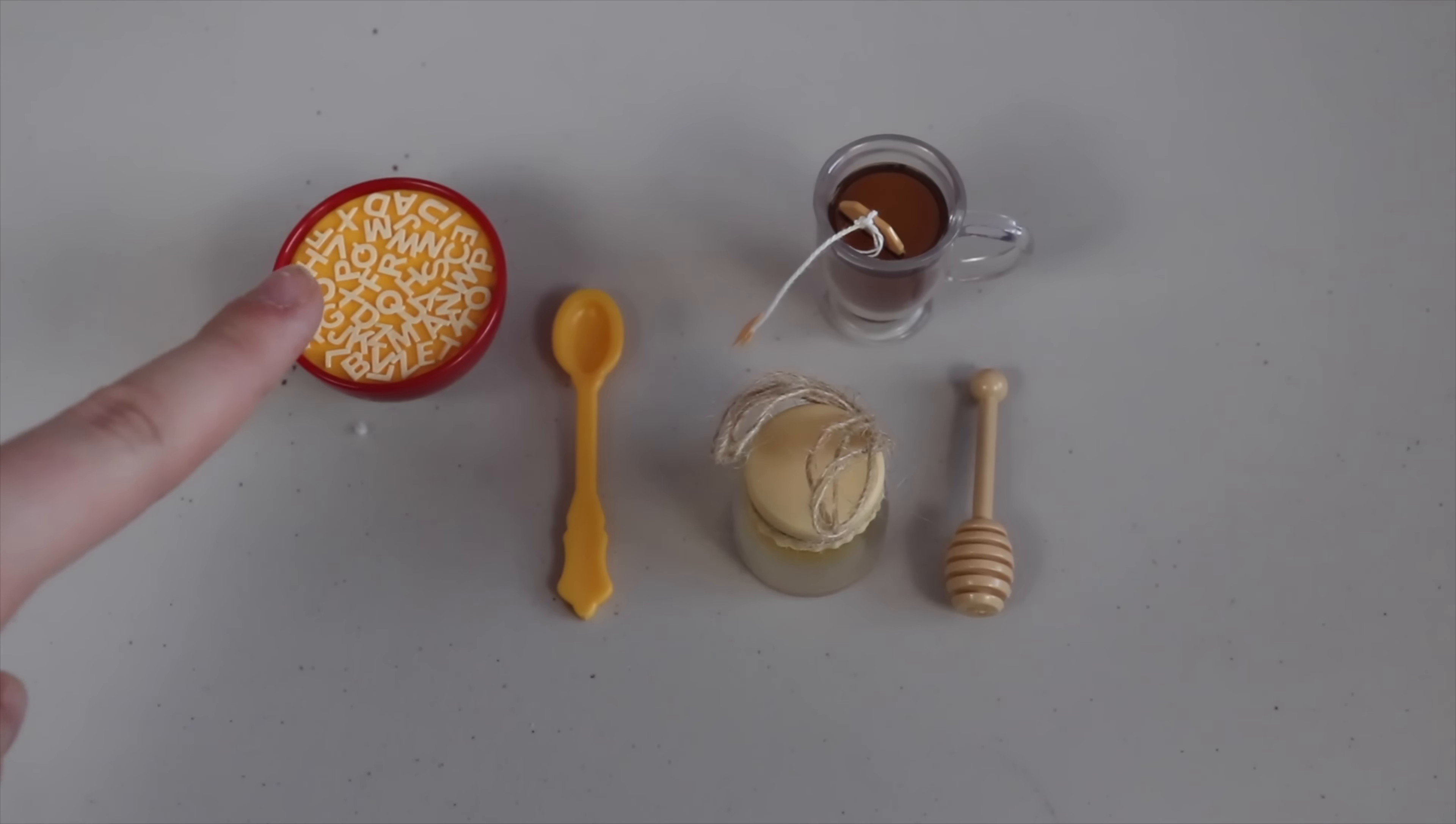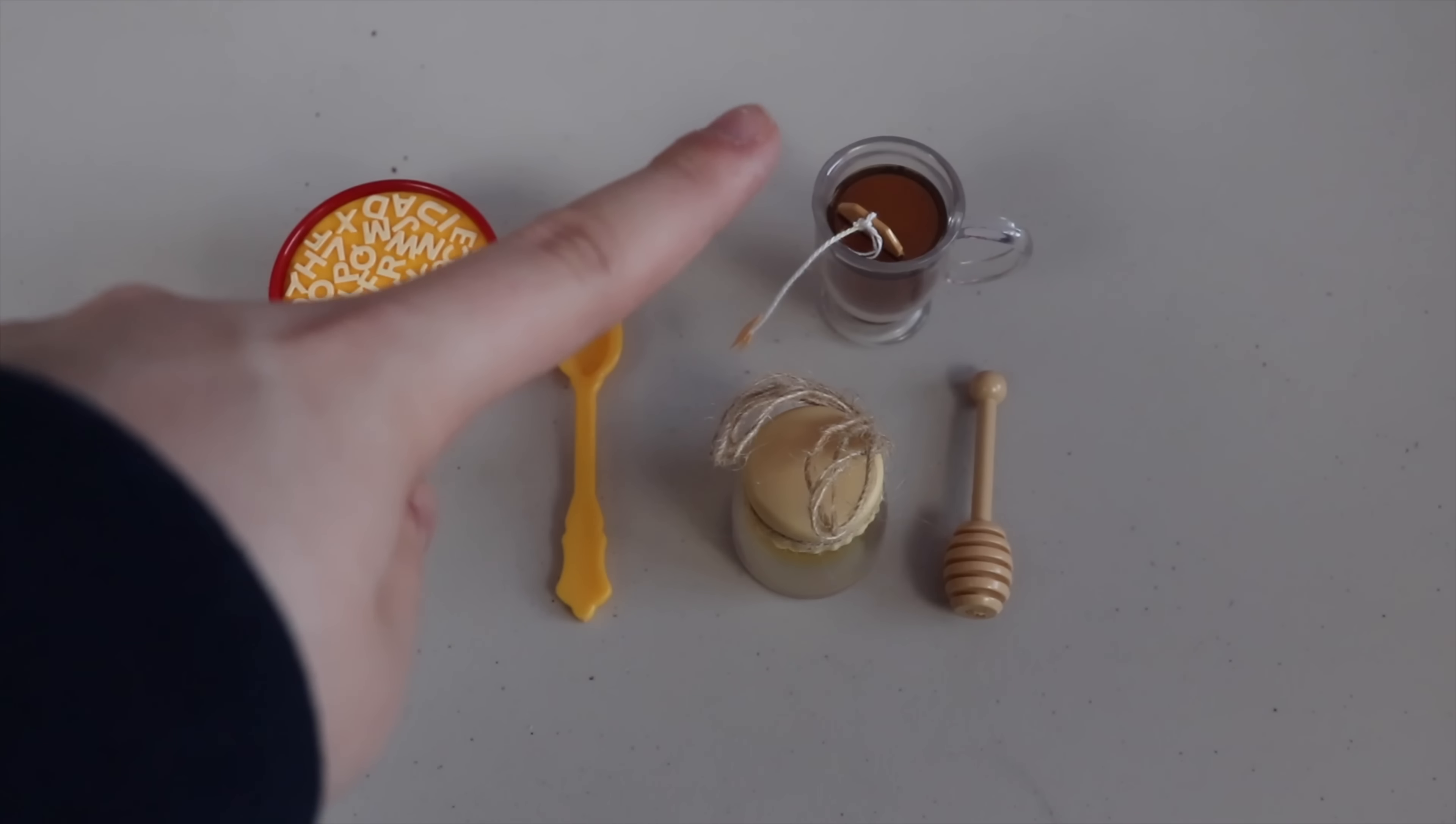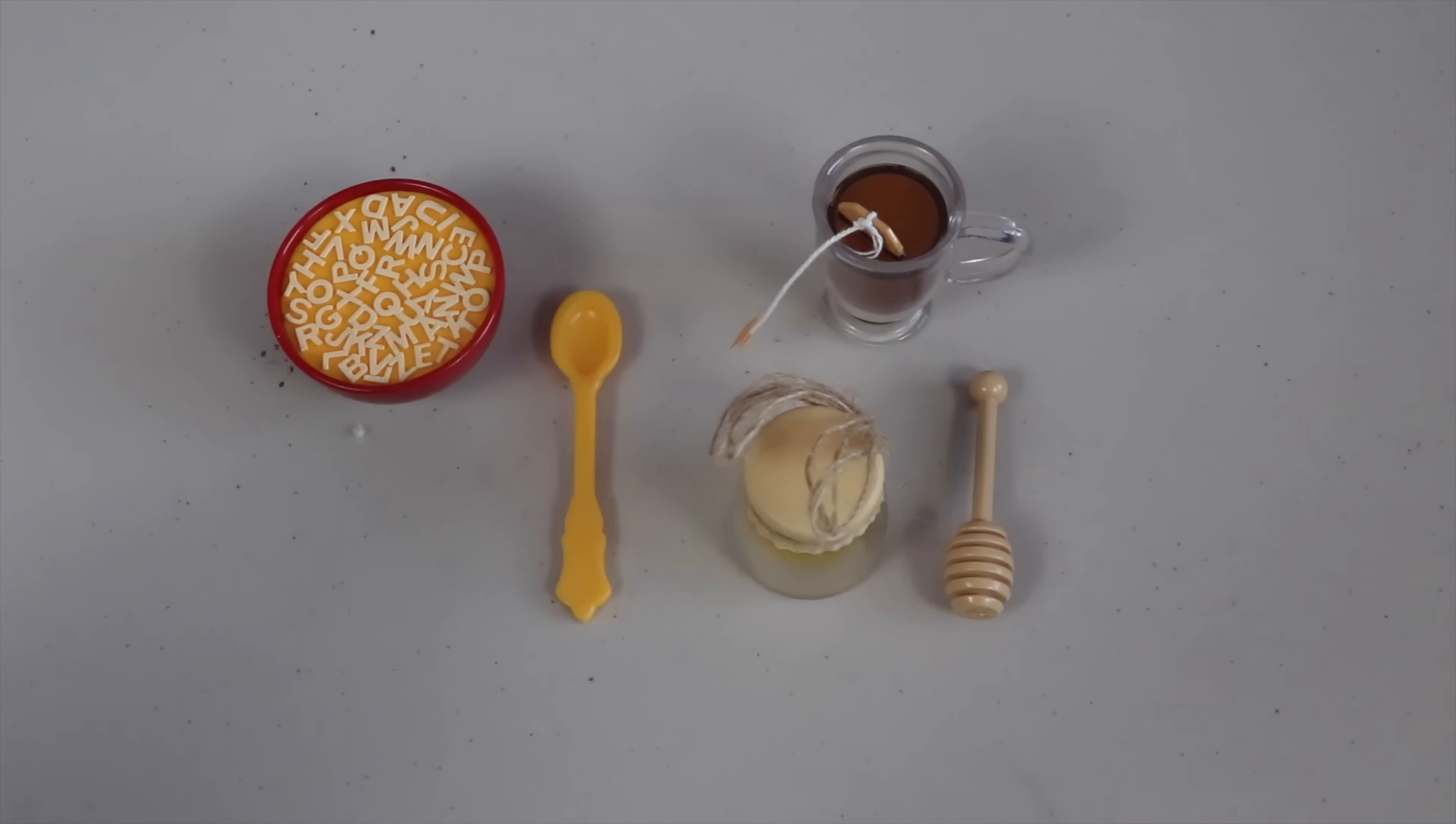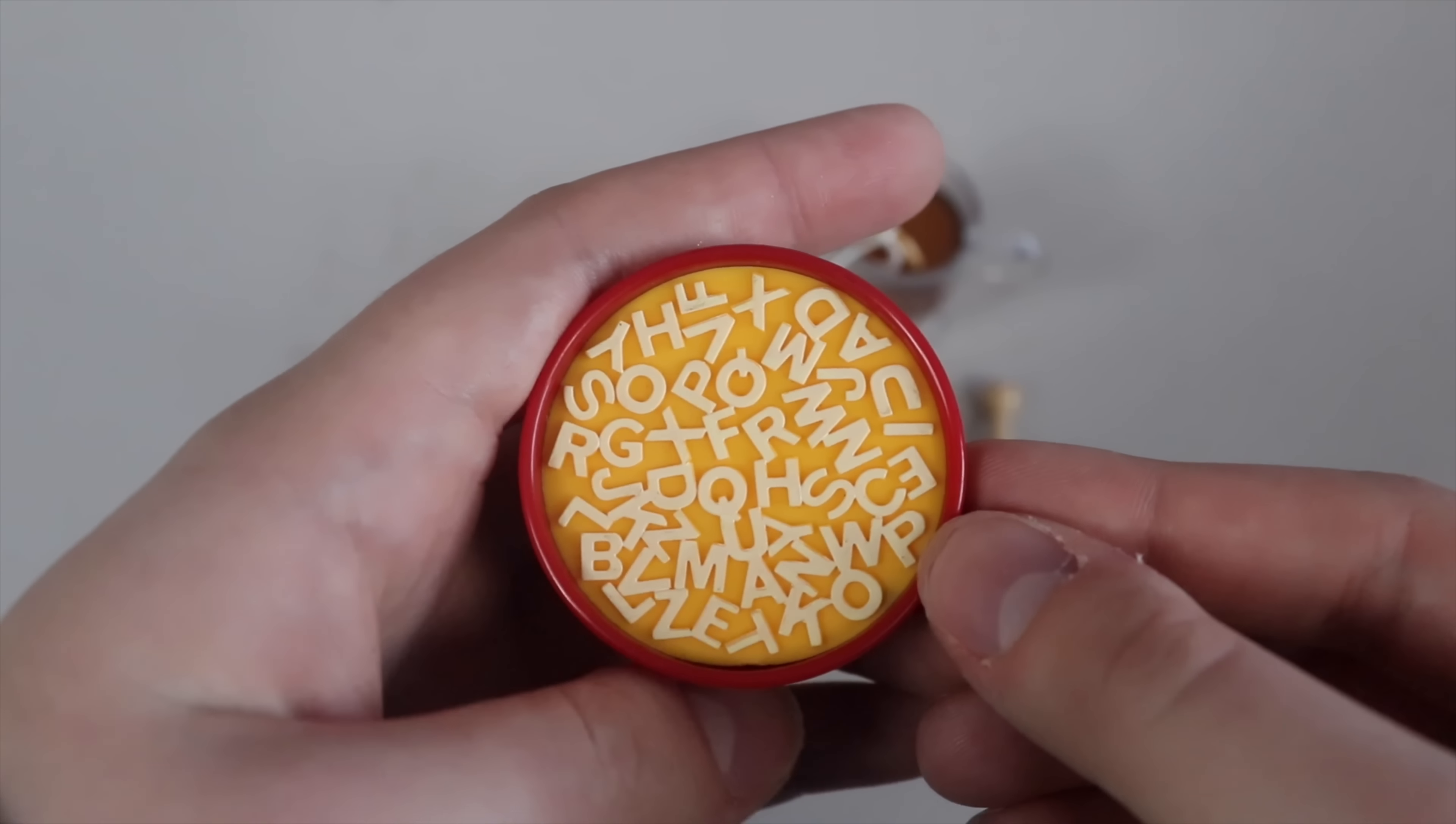Moving on, we have a bowl of soup, a spoon, a cup of tea, a jar of honey, and a honey stick. The bowl of soup is alphabet soup, so it has tons of different letters in there.